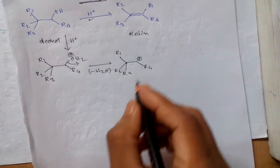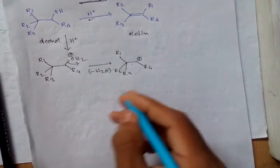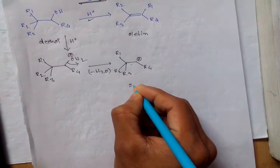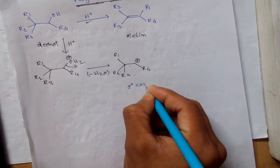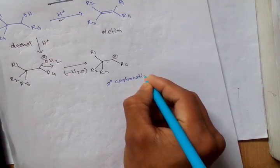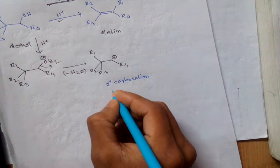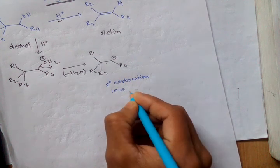Here, carbocation. This carbocation is 2 degree carbocation. And this 2 degree carbocation is less stable.